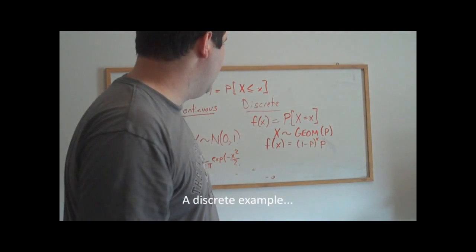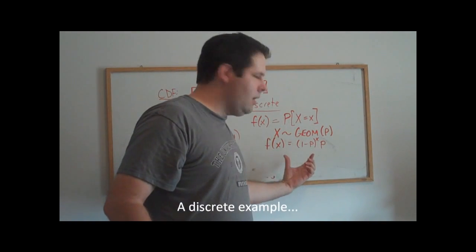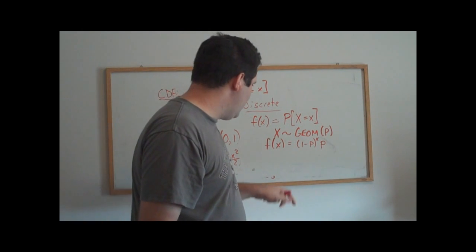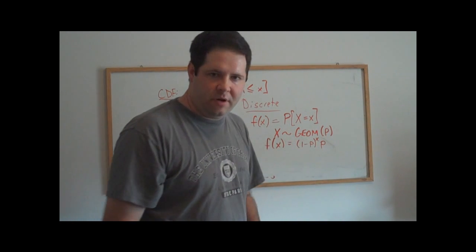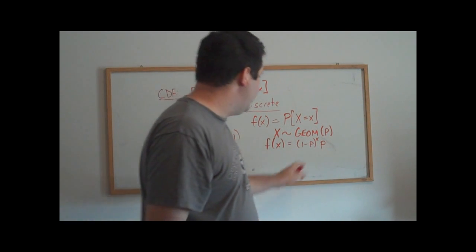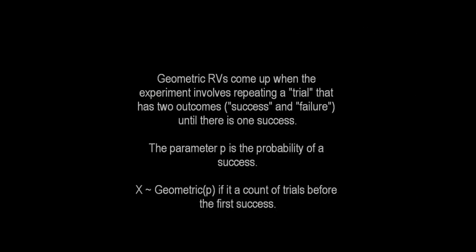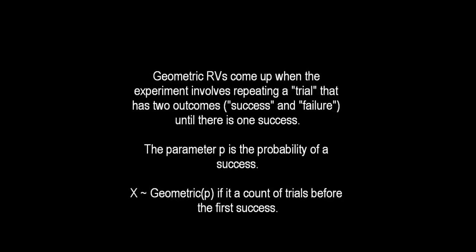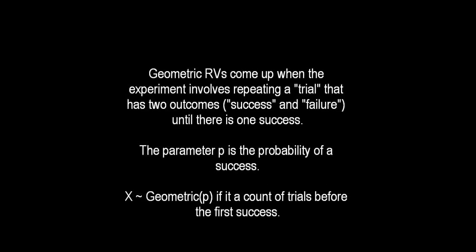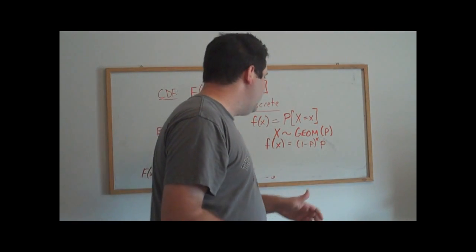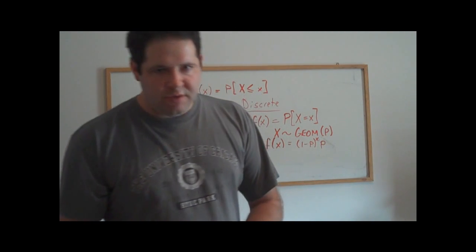This is going to be what we would call a discrete random variable's probability mass function. This discrete random variable is a geometric random variable. It has a parameter here called p.